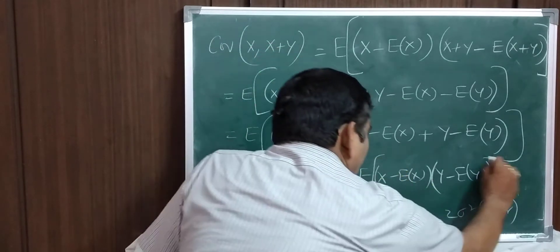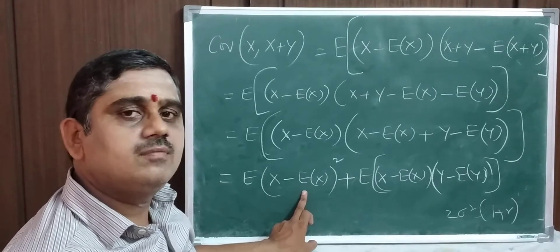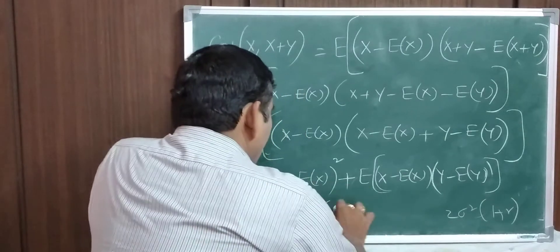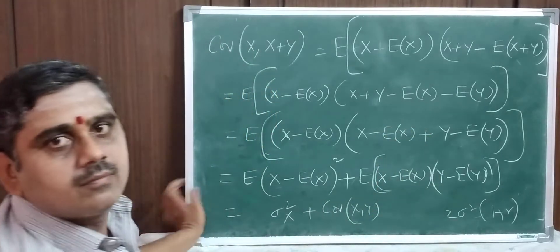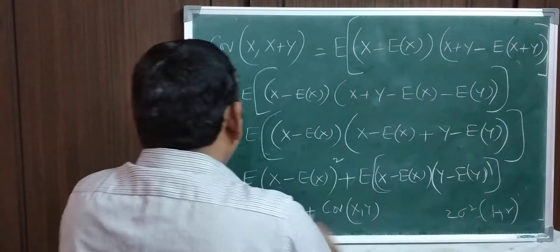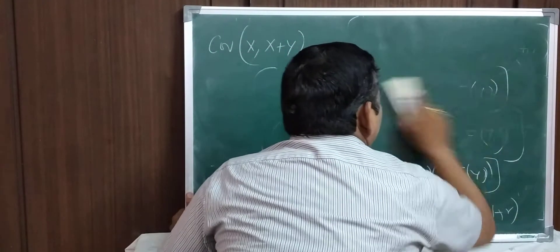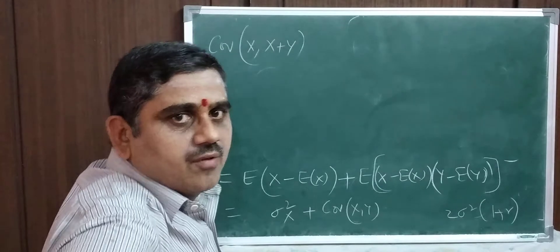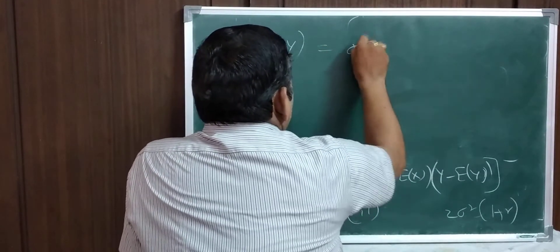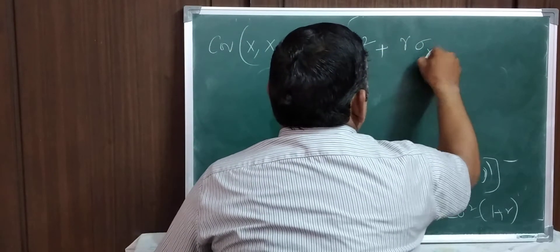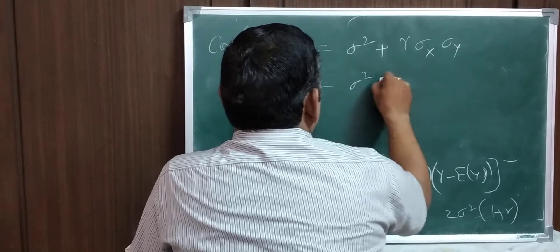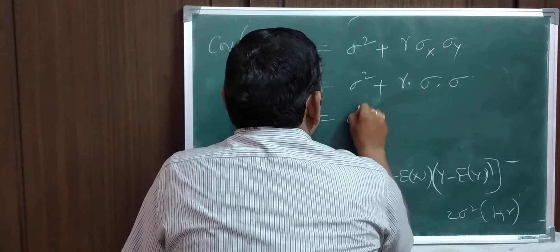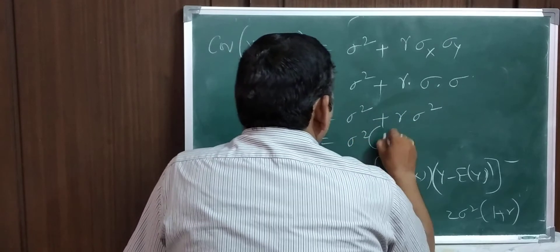Multiplying out: expectation of (x minus expectation of x) whole squared plus expectation of (x minus expectation of x)(y minus expectation of y). This equals sigma squared x plus covariance(x, y). Since sigma squared x equals sigma squared and covariance(x, y) equals r sigma x sigma y equals r sigma squared, we get covariance(x, x plus y) equals sigma squared plus r sigma squared equals sigma squared times (1 plus r).